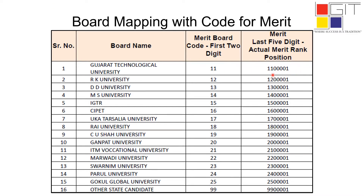The last five digits are your actual merit rank position. For example, for Gujarat Technological University, if you have completed your diploma from GTU, it will show 11 as your first two digits in your rank, and the other five digits — for example 00001 — is your actual merit rank. In this way you can identify your merit board code and actual merit rank position from your given rank.